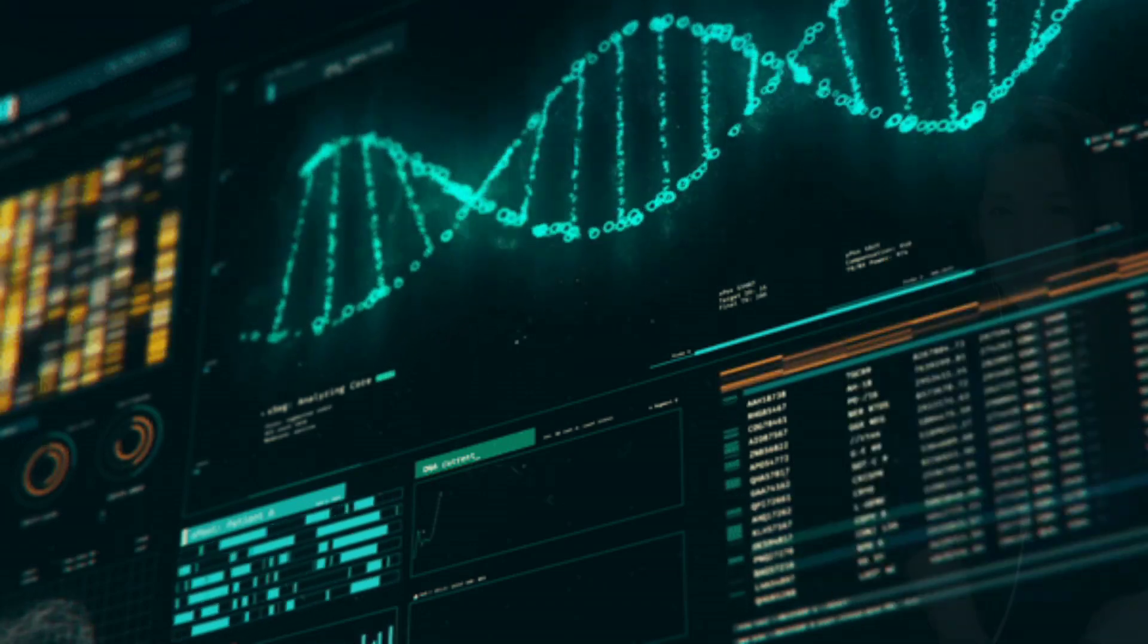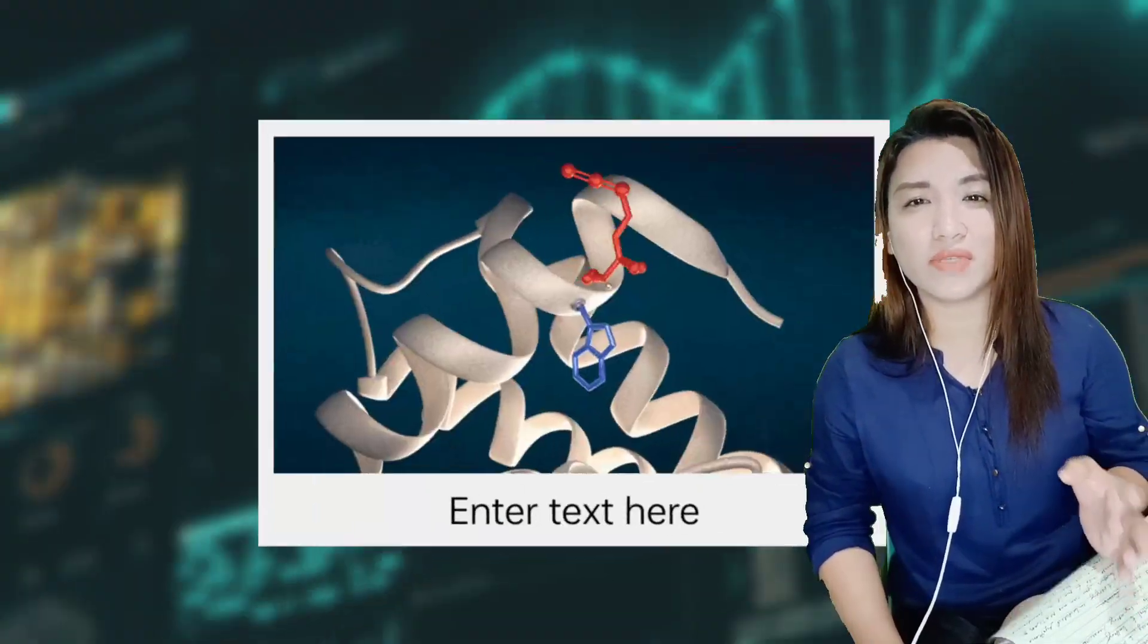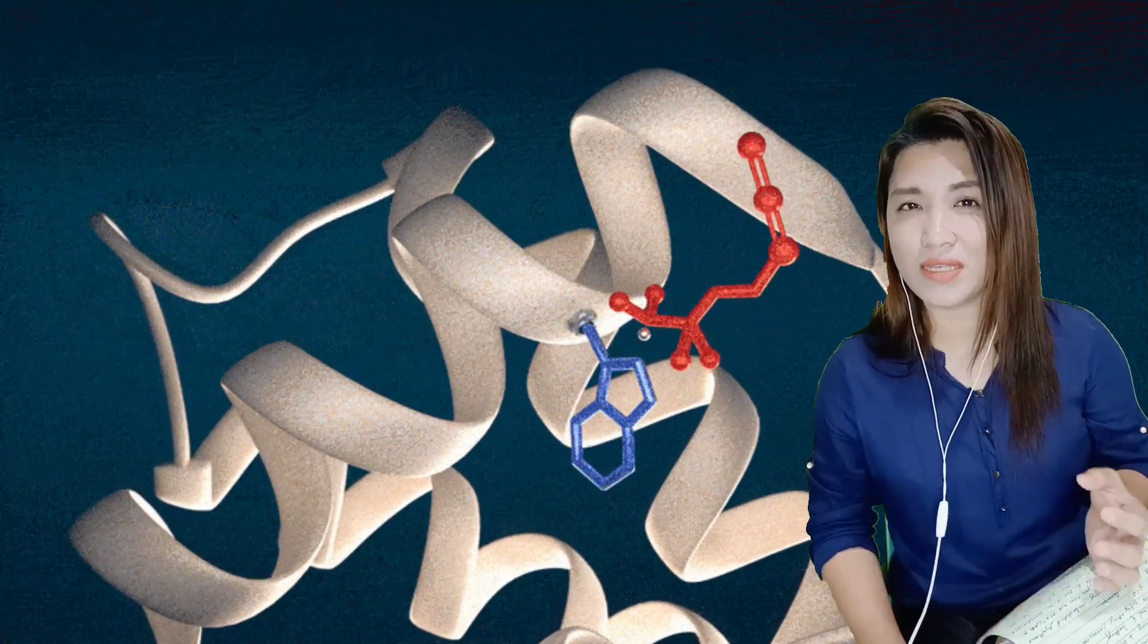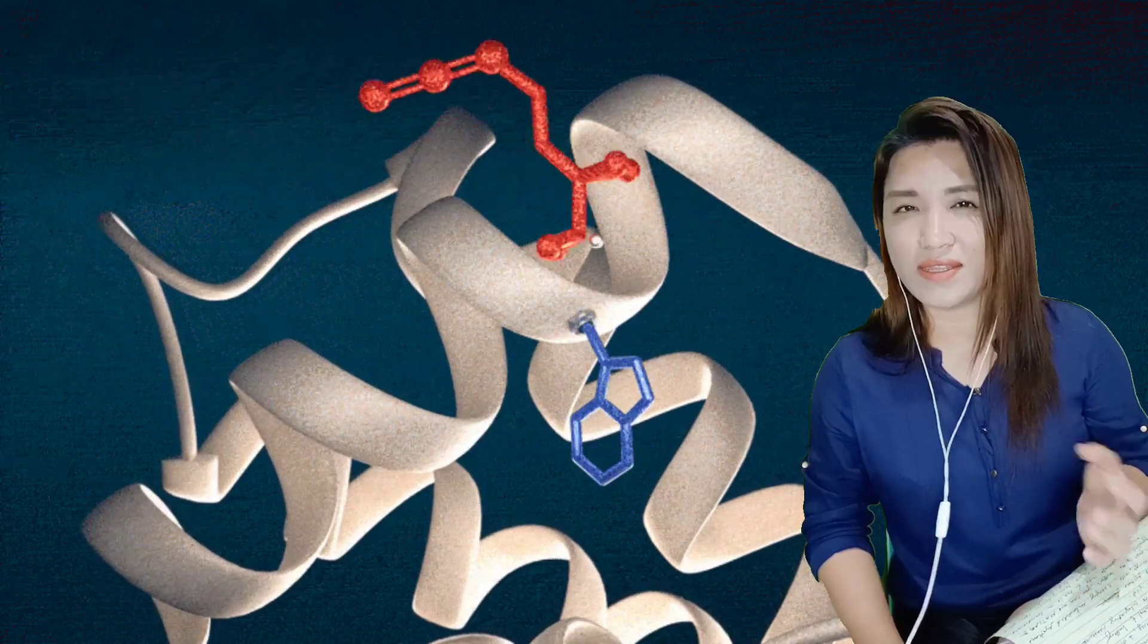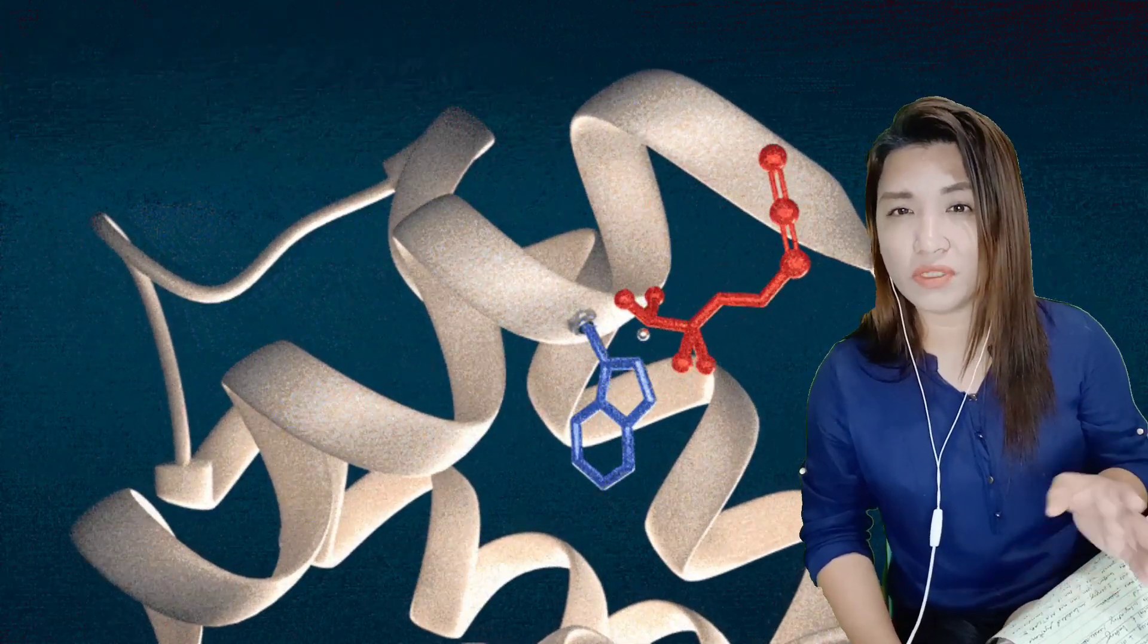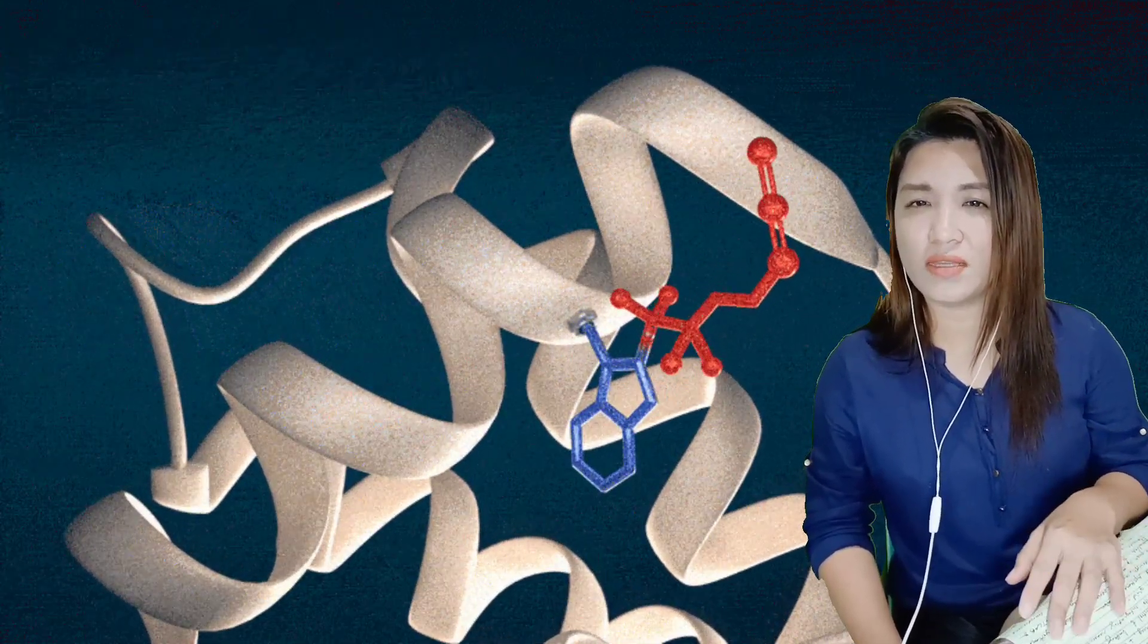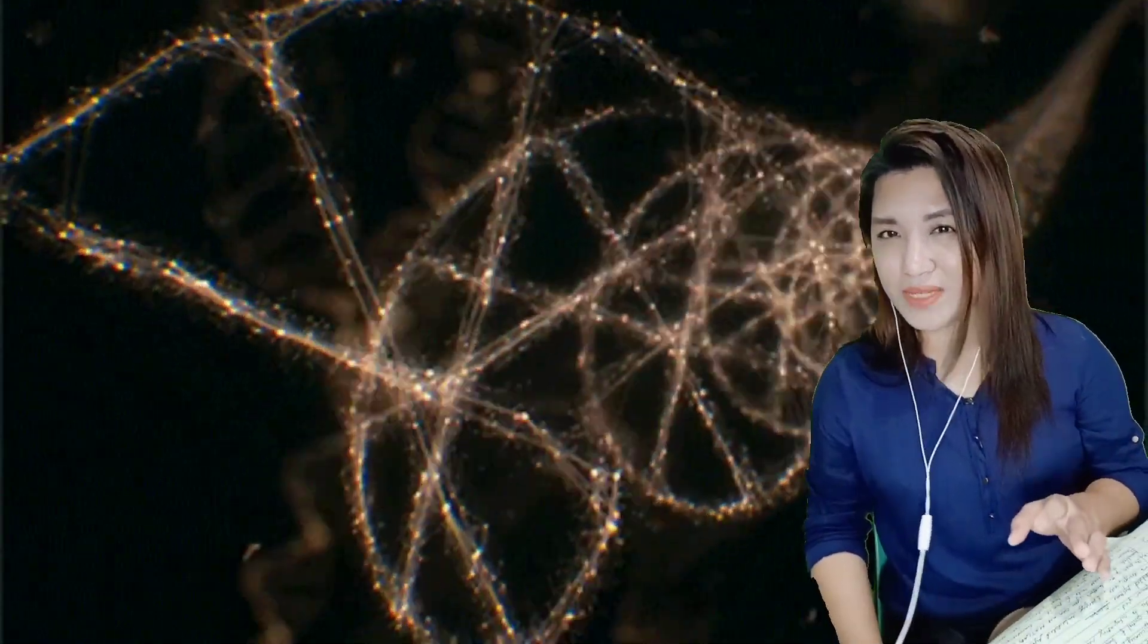In proteomics, MATLAB is used for analyzing mass spectrometry data and identifying proteins and protein-to-protein interactions. It is also used to simulate protein folding and dynamics, and to develop models for protein structure prediction.